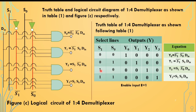For y3, both select lines are 1, 1, so the expression is y3 = s1 · s0 · din. In this way we get the output equations according to the truth table. Now we will draw the logical circuit of the 1 by 4 demultiplexer.